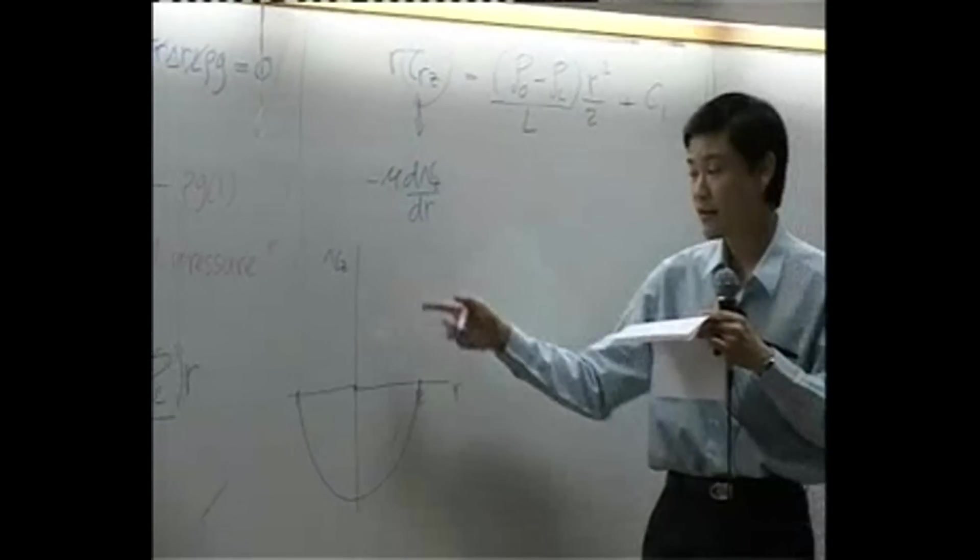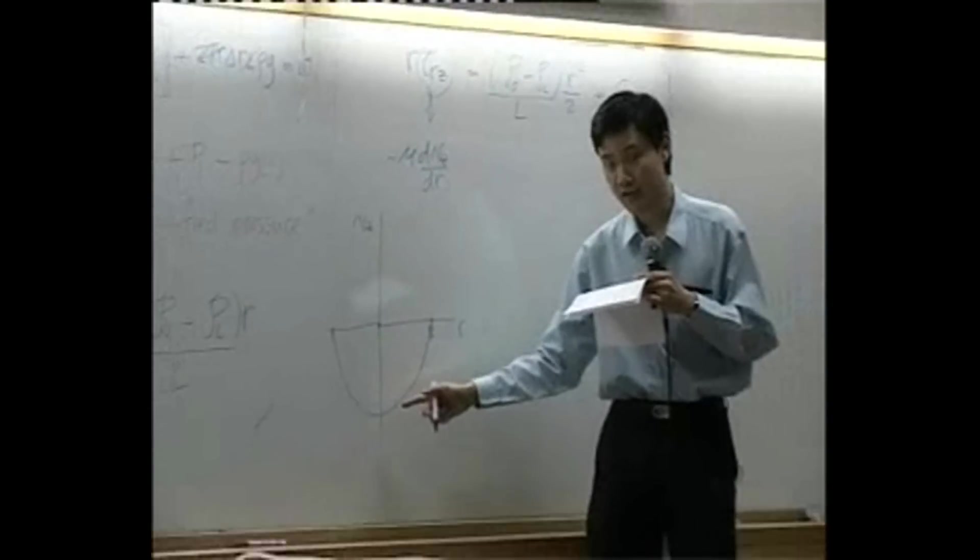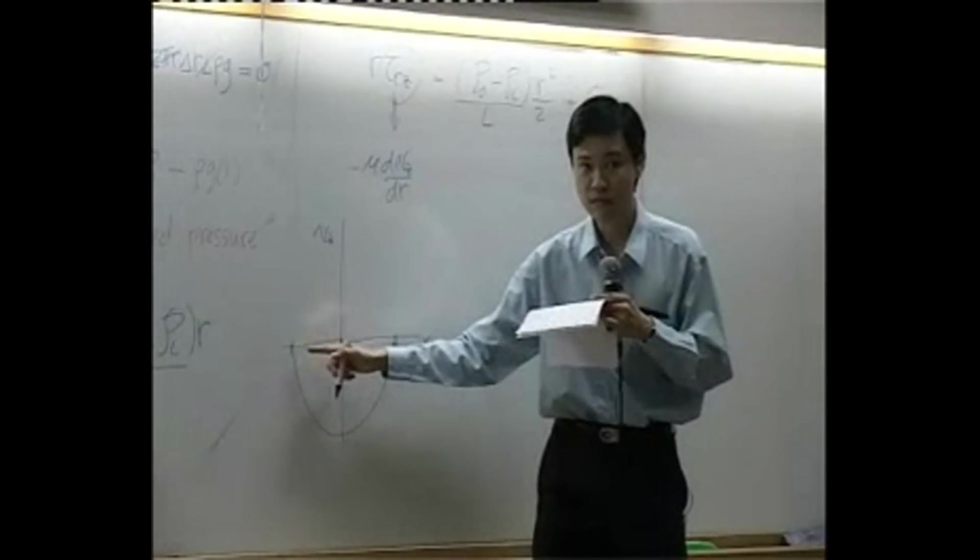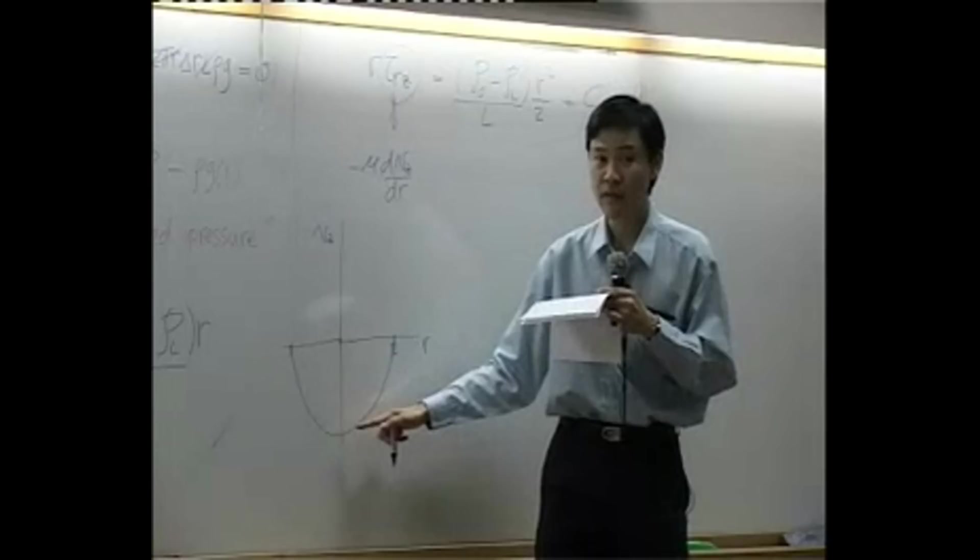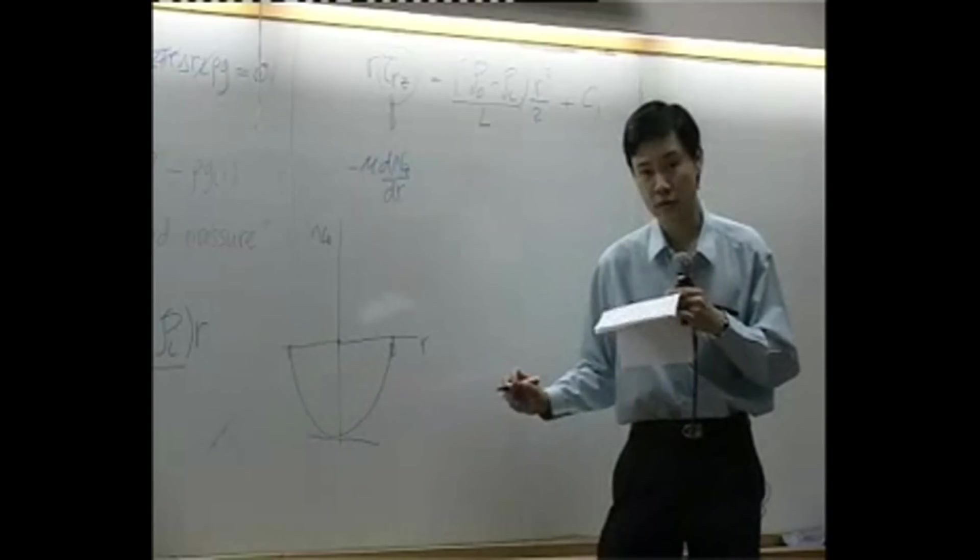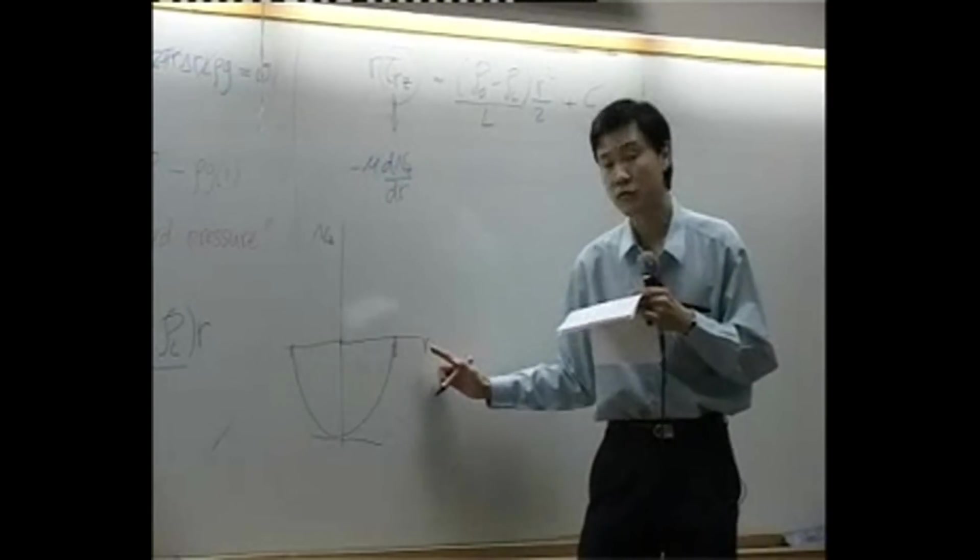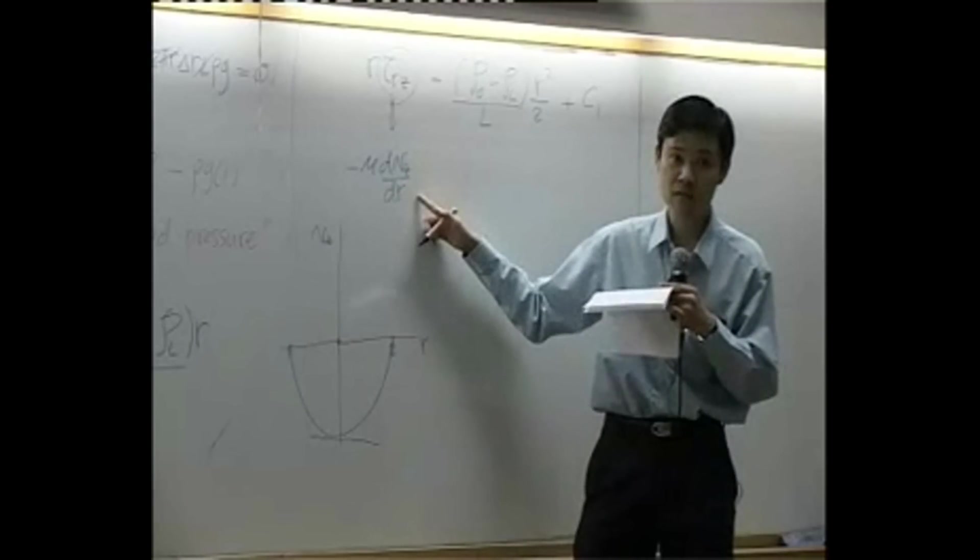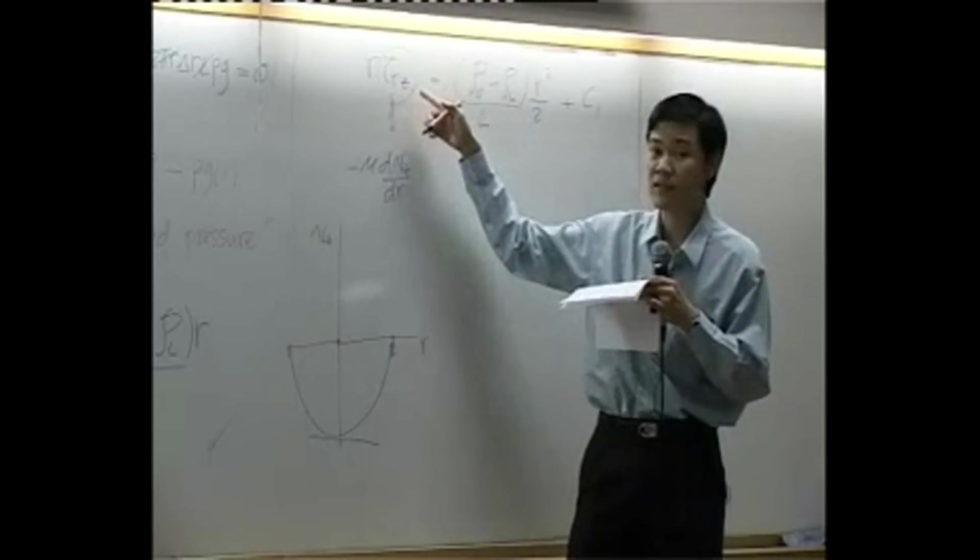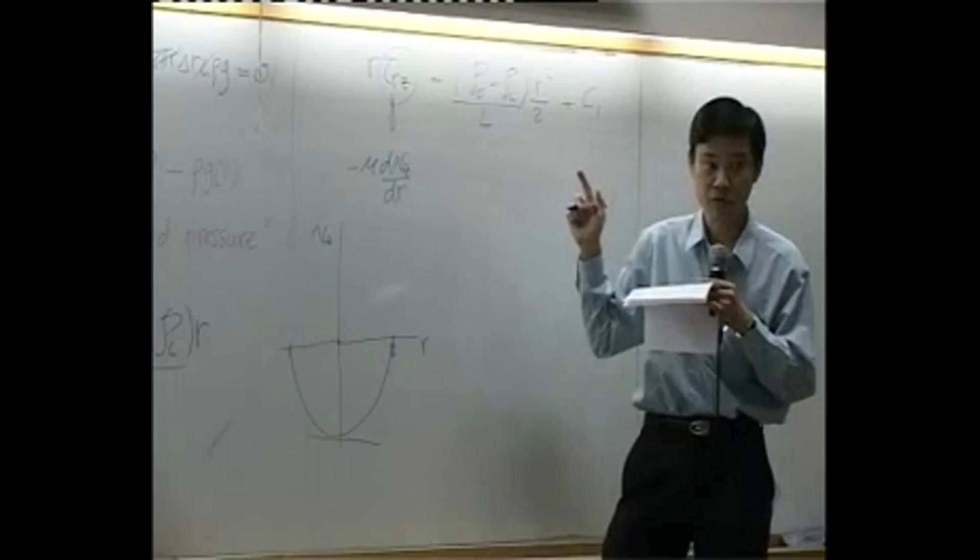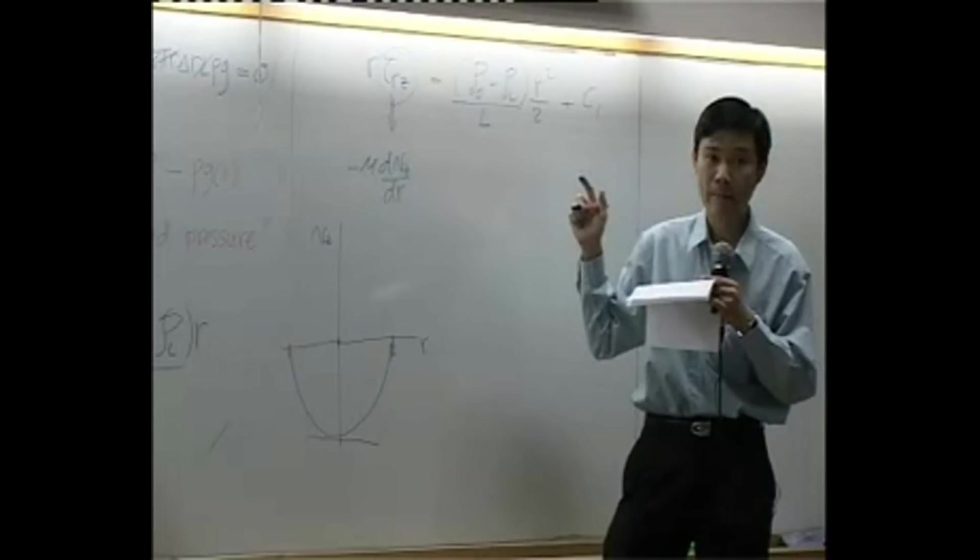So we know that velocity is maximum in the center, is zero on the wall, so there's supposed to be an inflection point. So slope here supposed to be zero at r equal to zero, and slope is dVz by dr. So that means tau Rz is supposed to be zero at r equal to zero.